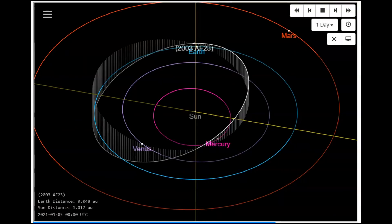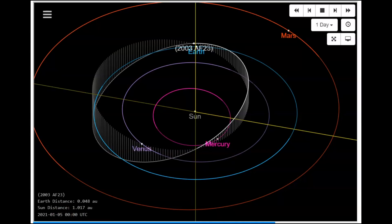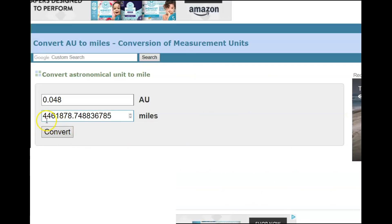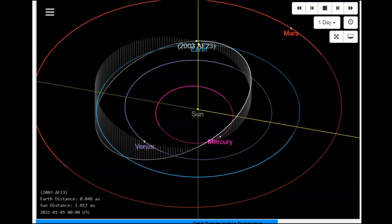Now 2003 AF23 is a very large asteroid. This is calculated by Universal Time, which actually would be 6 p.m. on the 6th, even though it shows the 5th. Its Earth distance is 0.048 astronomical units. So that would be about 4 million, 461 thousand, 878 miles from Earth, and that is about 220 meters across, or about 720 feet across.